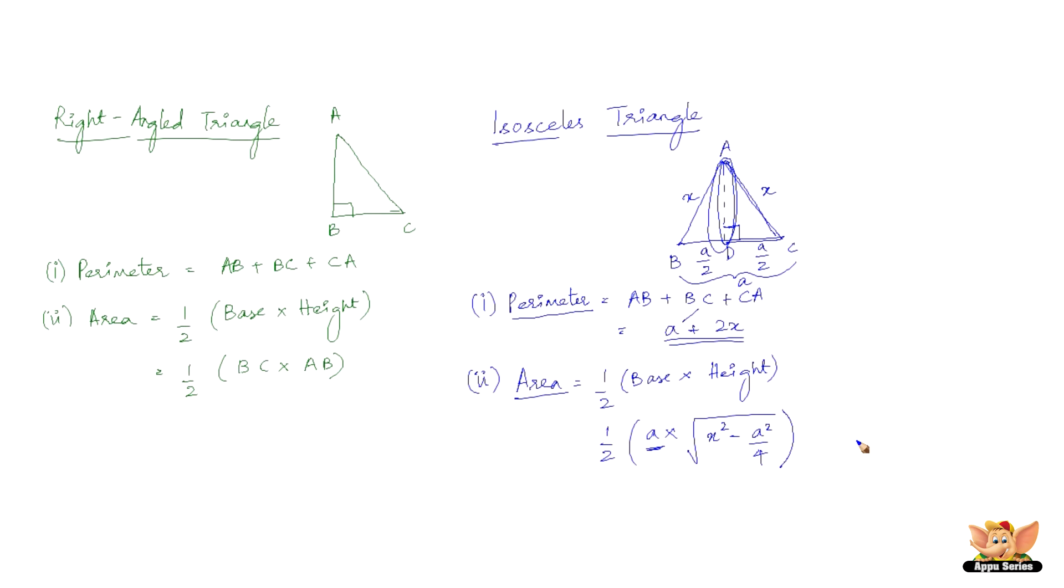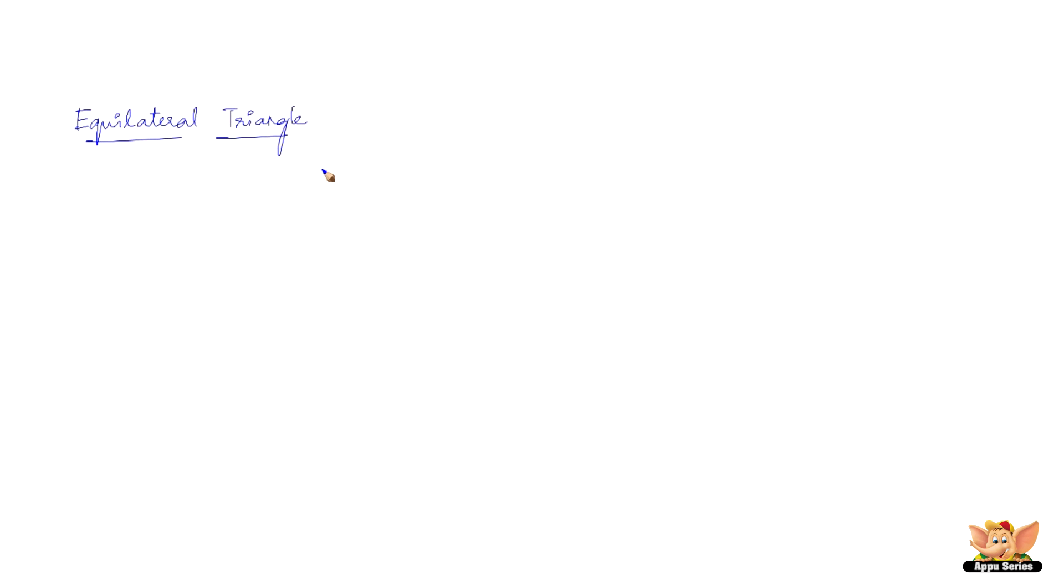Now let's look into equilateral triangle. As the name suggests it is equilateral, so all three sides are equal, denoted by a, a, and a. Perimeter of this triangle is simple: 3a gives you the total length of the sides of this closed figure.